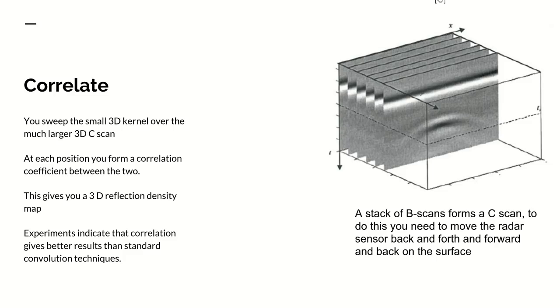And we get an output image, a three-dimensional output image, where each point in it corresponds to the degree of correlation that we got between the kernel and the actual scan data. We're using a standard Pearson correlation coefficient here.